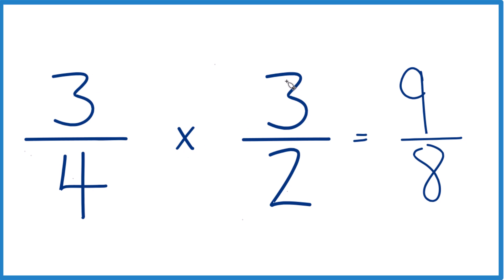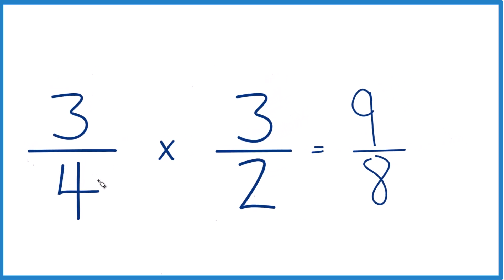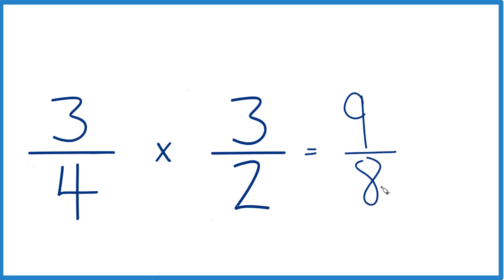So three-fourths times three over two, or you could say three-fourths divided by two over three. That'll give you nine-eighths.